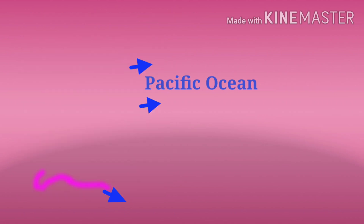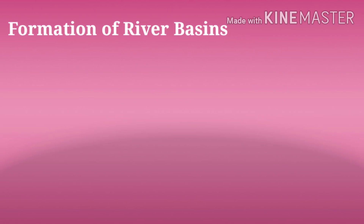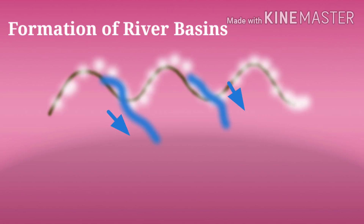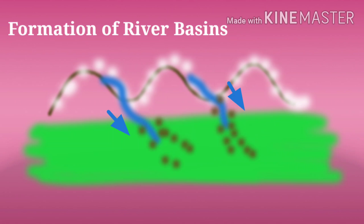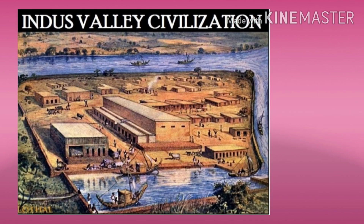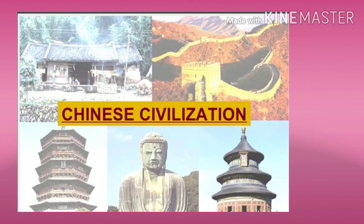Many rivers originate from the snow-laden mountains and flow through plains, bringing large quantities of fertile alluvial soils and depositing them in their respective valleys. This is how the great river basins are formed. Due to fertile soil and adequate water availability, many civilizations have flourished in these river basins, for example the Indus Valley Civilization, Mesopotamian Civilization and Chinese Civilization.